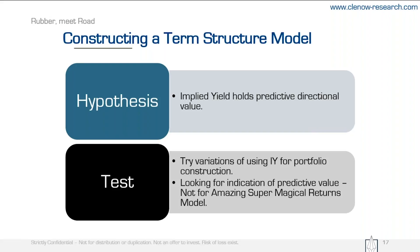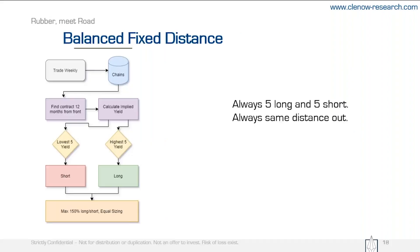The first model will look like this. We trade once a week — only once a week are we checking data. Which day of the week doesn't particularly matter; I traded on Monday morning here. So once a week, Monday morning, we check the futures chain for a set of commodity markets. In this first simple model, we are just looking at the implied yields from a contract one full year out compared to the closest contract — calculating this 12-month implied yield.